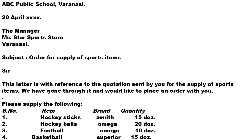The second paragraph presents the order in tabular form: serial number, item, brand, and quantity. Number 1 — Hockey Sticks, brand Zenith, 15 dozen; Hockey Balls, brand Omega, 20 dozen; Football, brand Omega, 10 dozen; Basketball, brand Superior, 15 dozen. Either quality or brand name may be specified.